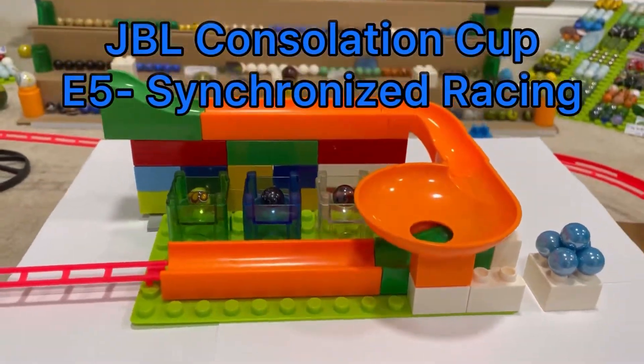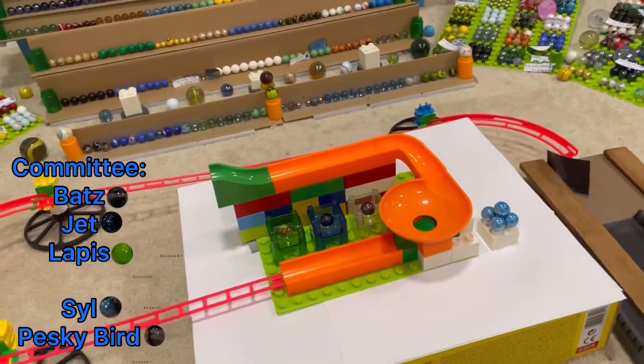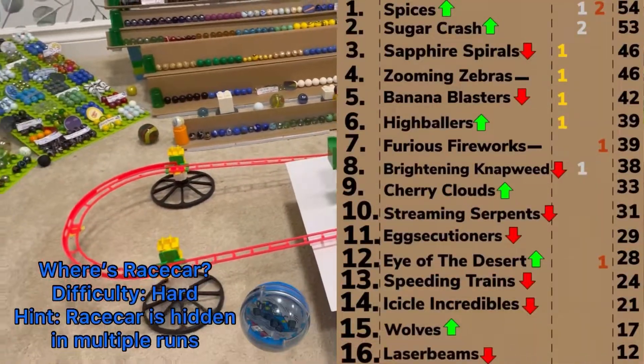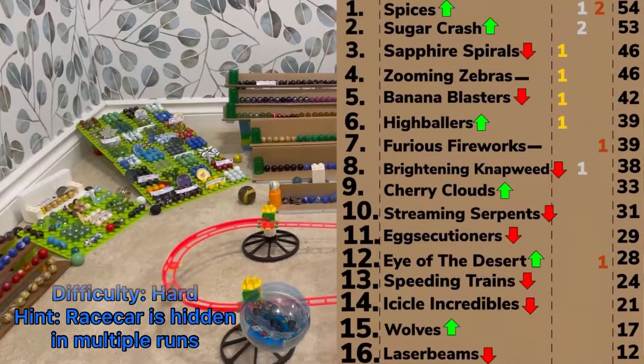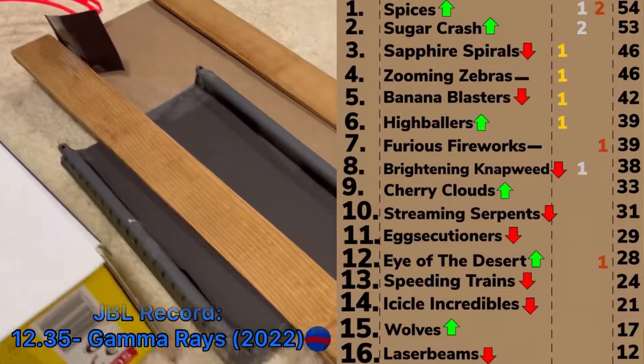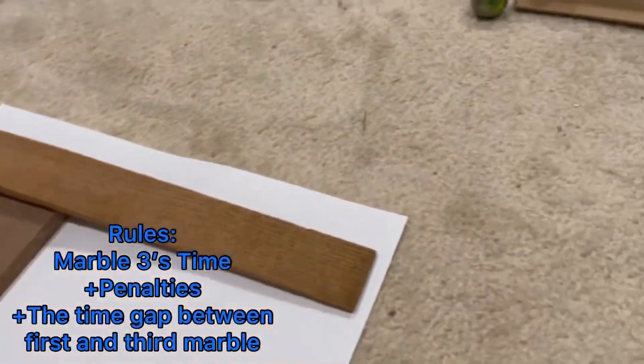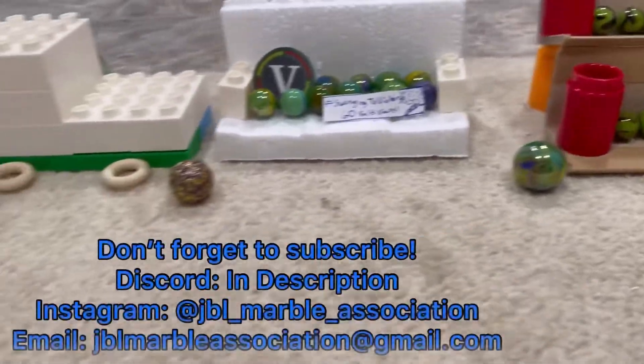With the first half of the Consolation Cup already behind us, we're ready to start the second half, and we're starting this off with a test of teamwork. Hello everyone and welcome to the JBL Consolation Cup Season 1, Event 5, The Synchronized Racing.